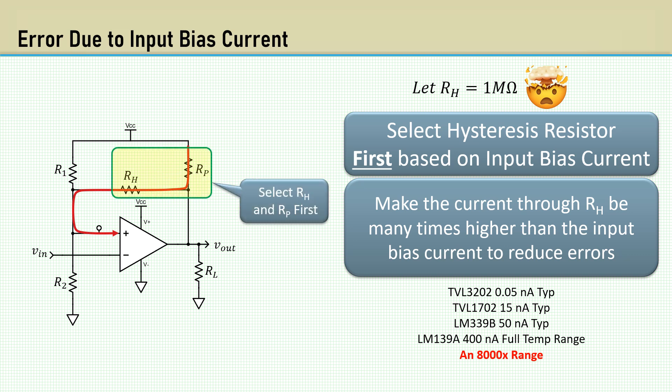Since the pull-up resistor is in series with RH, it needs to be selected and made much smaller than RH at the first as well.